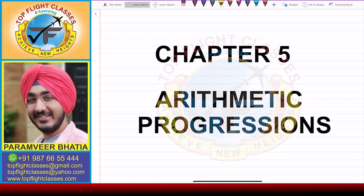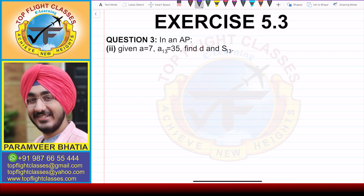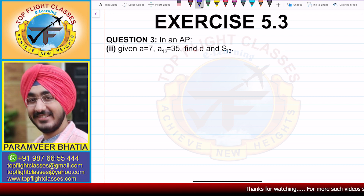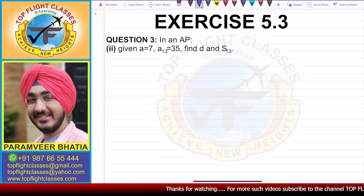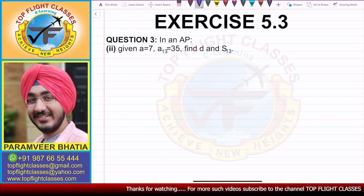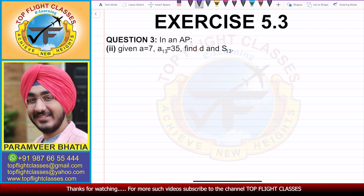Hey guys, welcome to my channel Top Flight Classes. In this video, we are going to solve the second part of question number 3 of exercise 5.3. The question says: in an AP given A is equal to 7, A13 is equal to 35. We have to find D and S13.